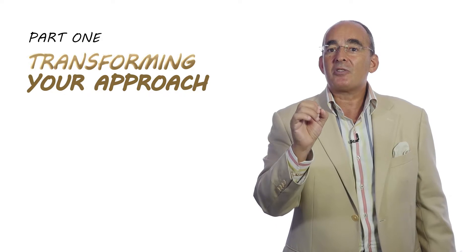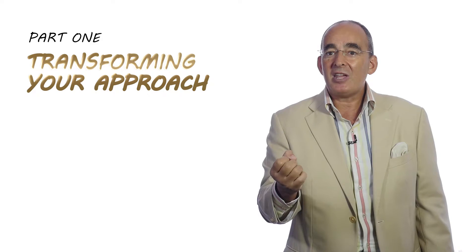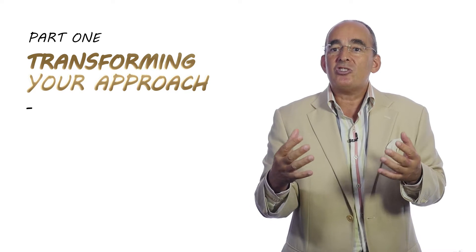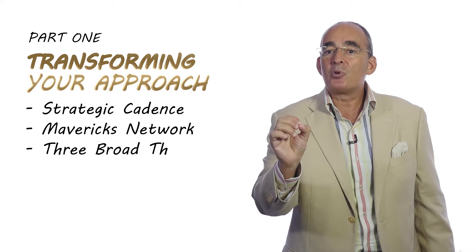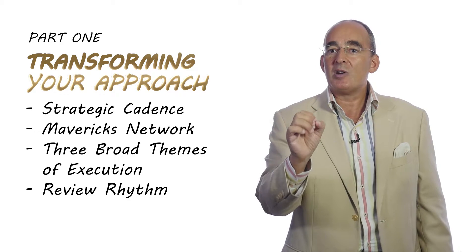The book is in two parts. Part one focuses on transforming your approach where we have a shift in thinking, where there's new language around strategic cajuns, Mavericks Network, the three broad themes of execution, and the review rhythm.